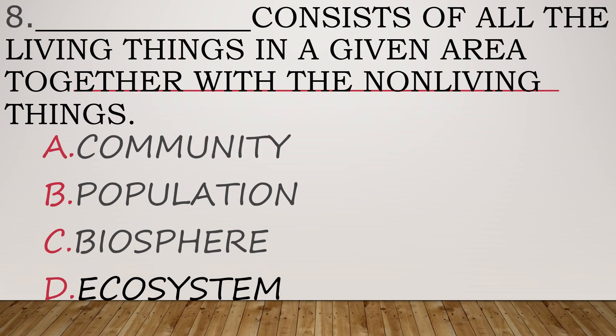Number eight. Blank consists of all the living things in a given area together with the non-living things. A. Community. B. Population. C. Biosphere. D. Ecosystem.